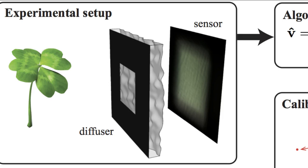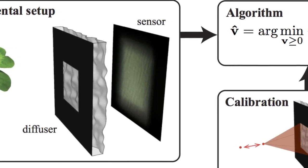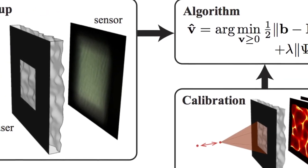Ultimately, it could prove useful for a wide range of applications involving 3D capture. The camera is compact and inexpensive to construct because it consists of only a diffuser — essentially a bumpy piece of plastic placed on top of an image sensor. Although the hardware is simple, the software it uses to reconstruct high-resolution 3D images is very complex.